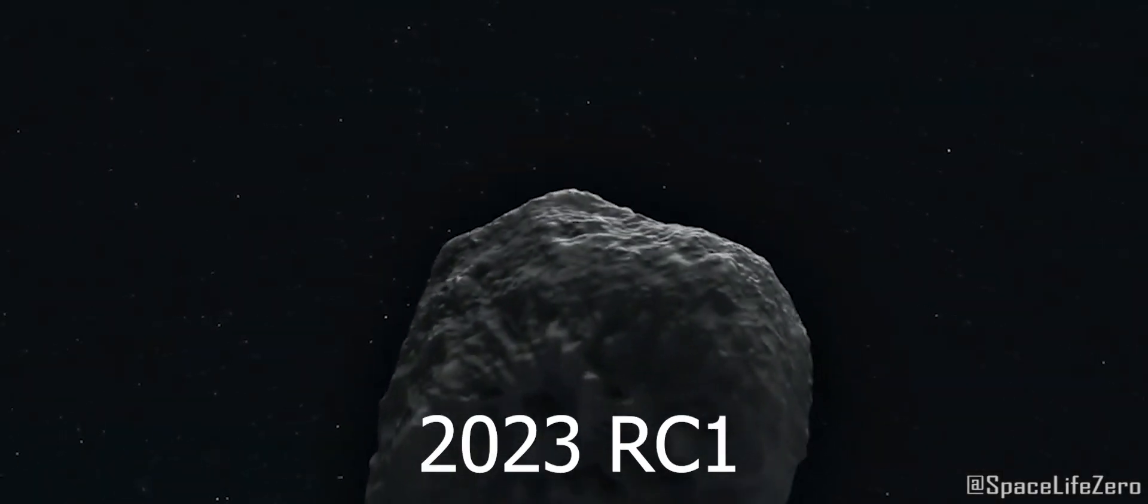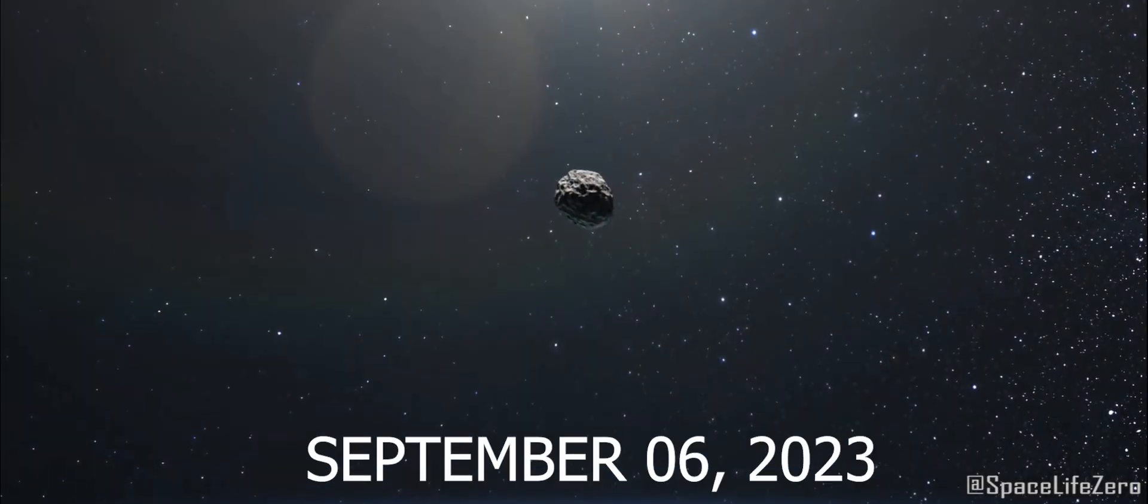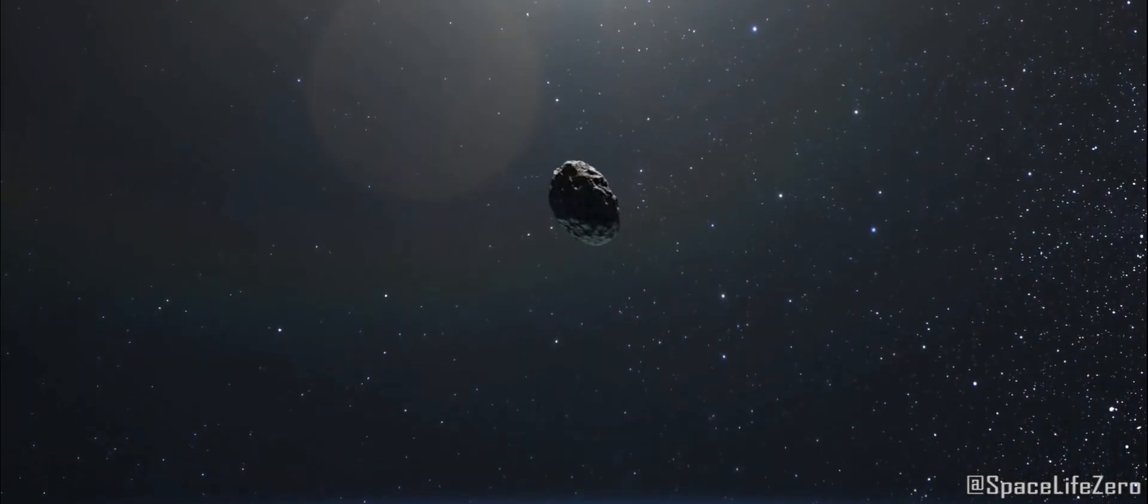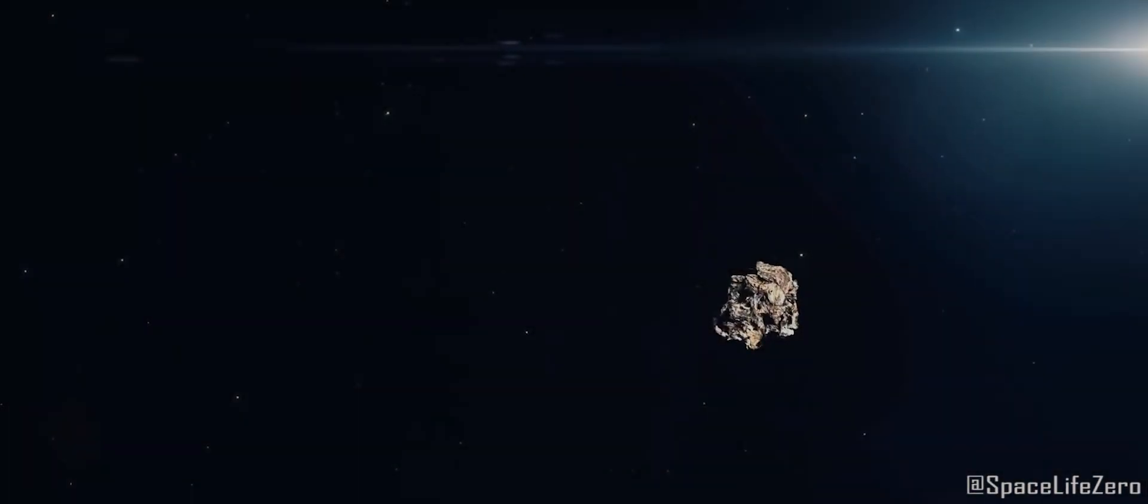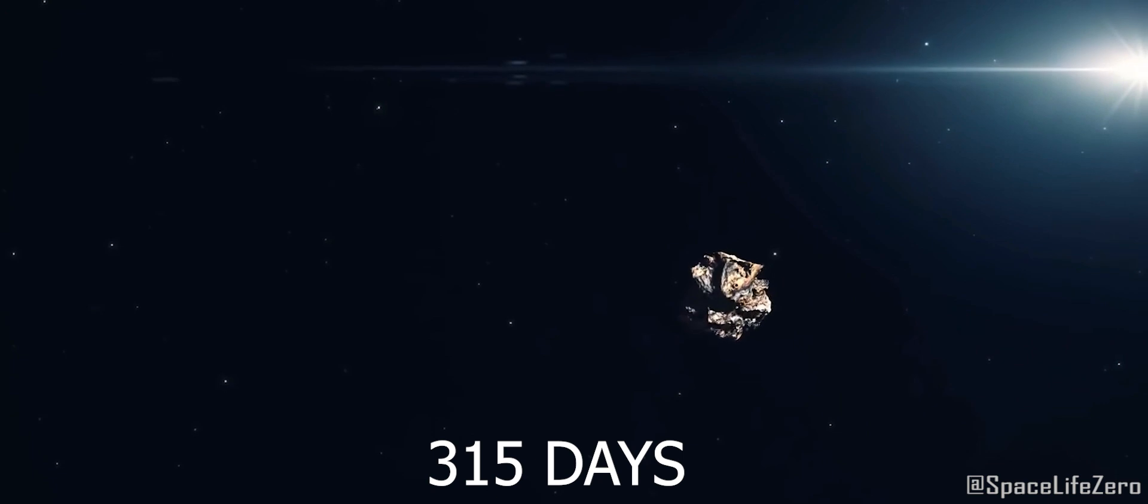Asteroid 2023 RC1. This asteroid was discovered on September 6, 2023, and it belongs to the Aten Group. It makes one orbit around the Sun in 315 days.